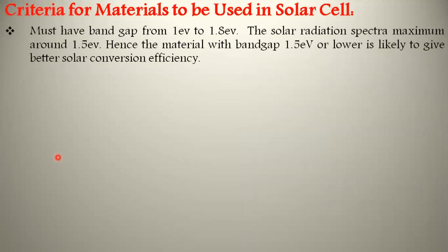The criteria for materials to be used in solar cell: which type of materials are suitable for the construction of solar cells is one of the most important topics to manufacture solar cells. First, the solar cell is generally manufactured using semiconducting materials.